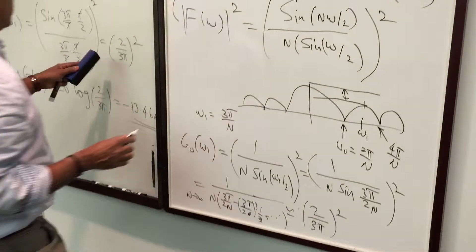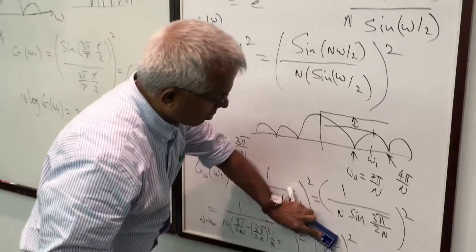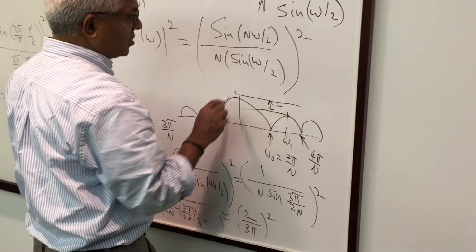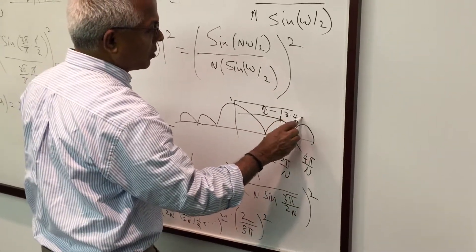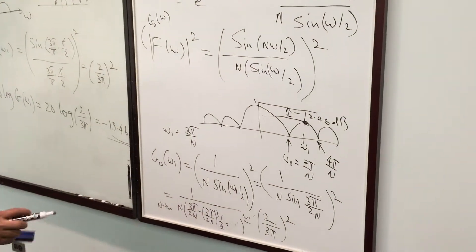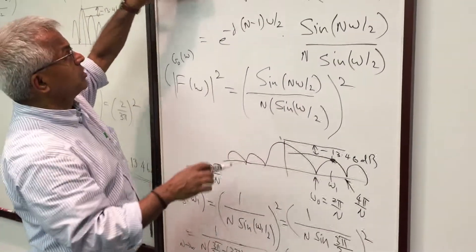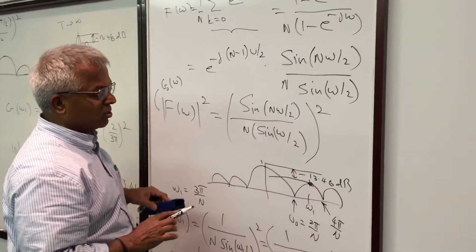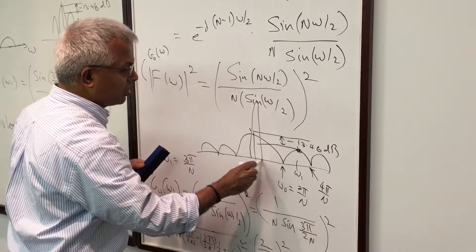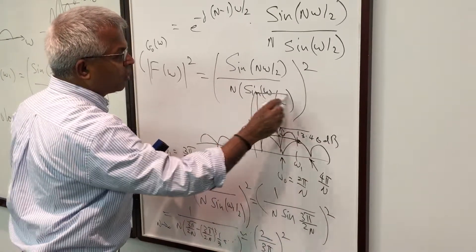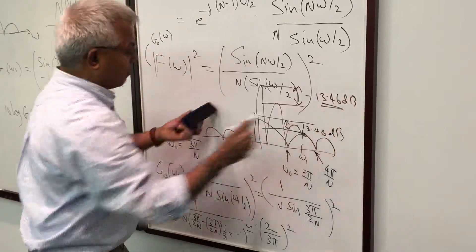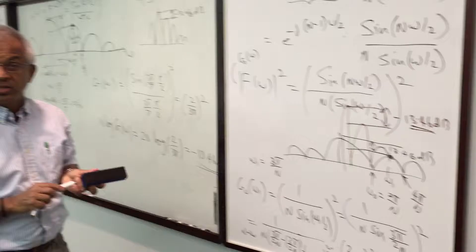This is the same result as in the continuous case. Even in the discrete case, compared to the main beam, the peak side lobe drops only by 13.46 dB. The interesting thing is you cannot improve this by simply adding more and more sensors. Adding more sensors causes the main beam to shrink, but the peak side lobe level remains at −13.46 dB.